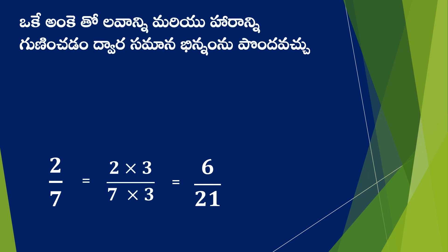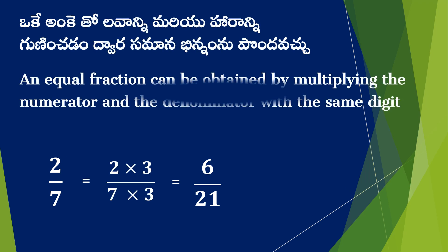Mariyu, ee saamana bhinnalanu manamu yee vidanga pondra vachu. How we will get equivalent fractions? Oksar gamani sthe, one khe aanketo, lavanni, mariyu, haranni, guninchadamu dhwara, samana bhinnalu pondra vachu. An equivalent fraction can be obtained by multiplying the numerator and denominator with the same digit.